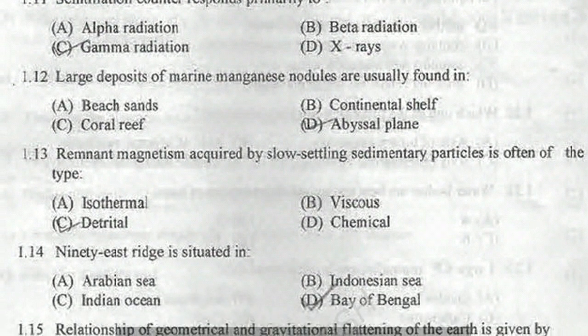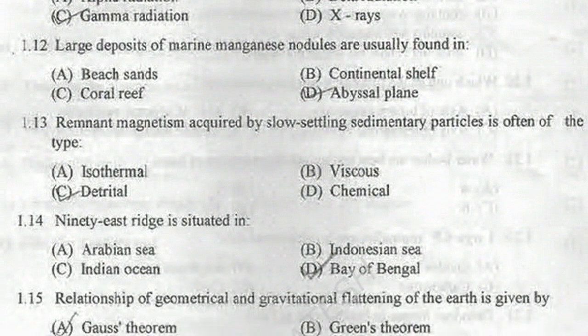Next question: large deposits of marine manganese nodules are usually found in beach sands, continental shelf, coral reefs, or abyssal plains? Polymetallic and manganese nodules are associated with deep marine conditions. Beach sands are shallow marine; continental shelf is also shallow; coral reefs are also found in shallow conditions. The abyssal plain is the deepest setting, so abyssal plains is the correct answer.